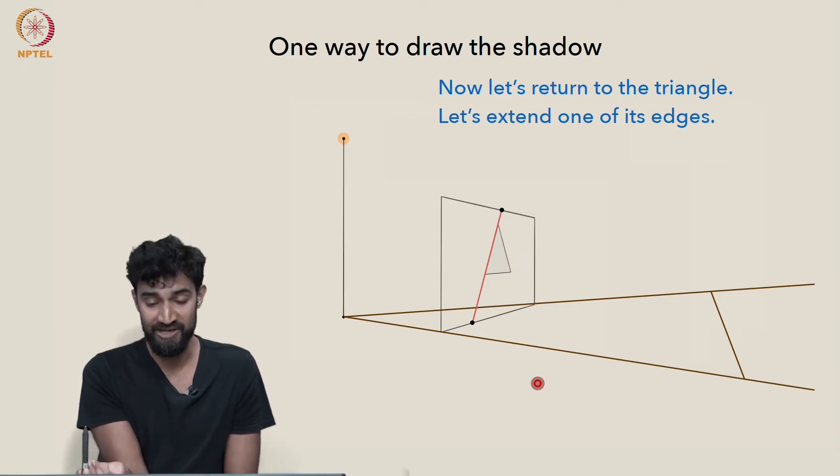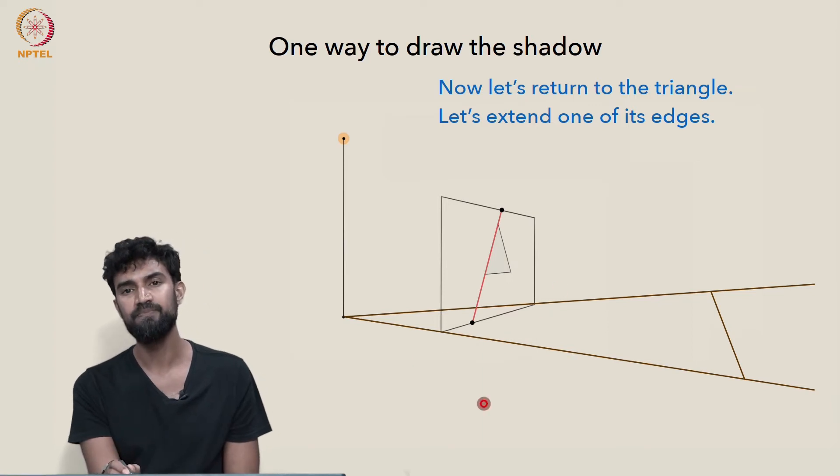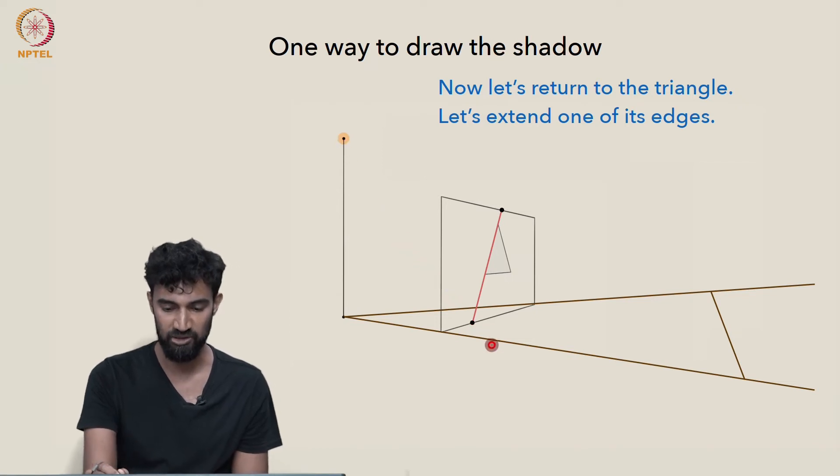Maybe we can project these two points. Well, actually, this bottom point here, where it intersects the ground plane, what's the image of that? What's the shadow of that going to look like?